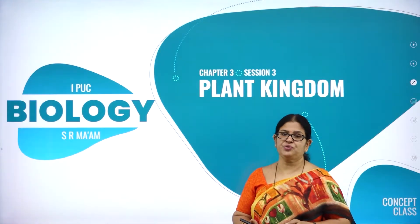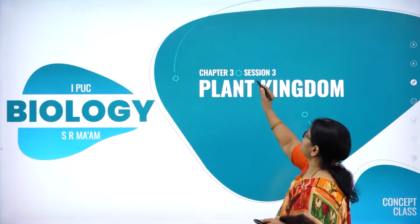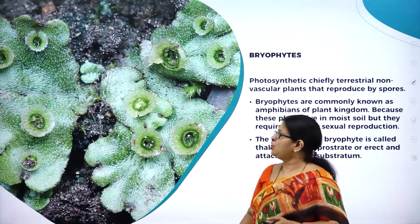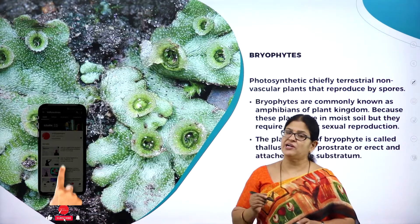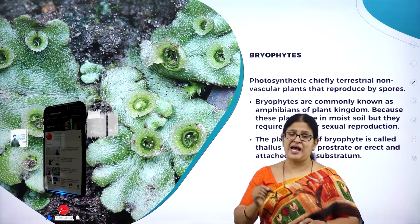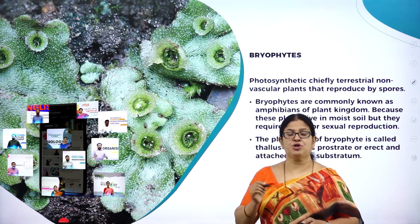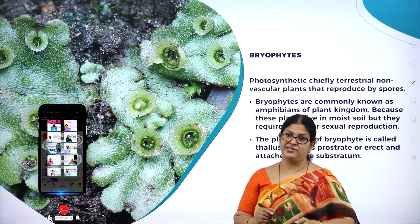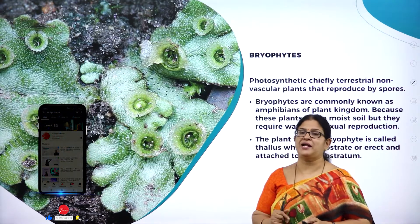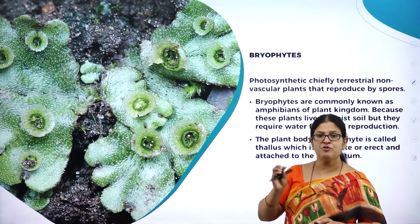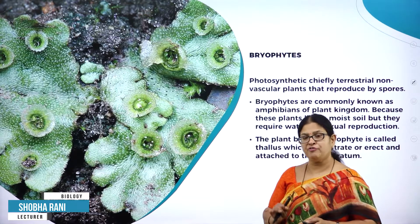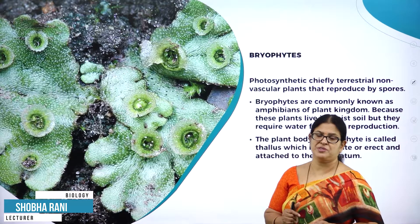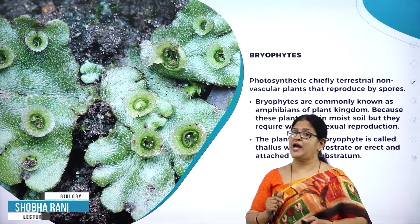Hello dear students, welcome back to session 3 of this chapter called Plant Kingdom. Hope you remember in my last session we started off with the classes of algae - Chlorophyceae, Phaeophyceae and Rhodophyceae. As you know, the whole of the plant kingdom is divided into 5 main groups: algae, bryophytes, pteridophytes, gymnosperms and angiosperms. We have already learnt about algae.